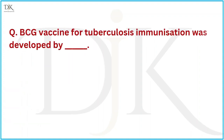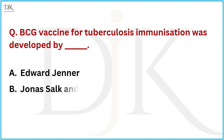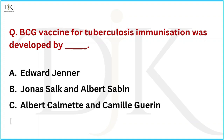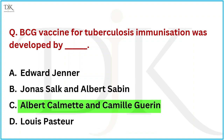The BCG vaccine for tuberculosis immunization was developed by whom? The right answer is Albert Calmette and Camille Guérin.